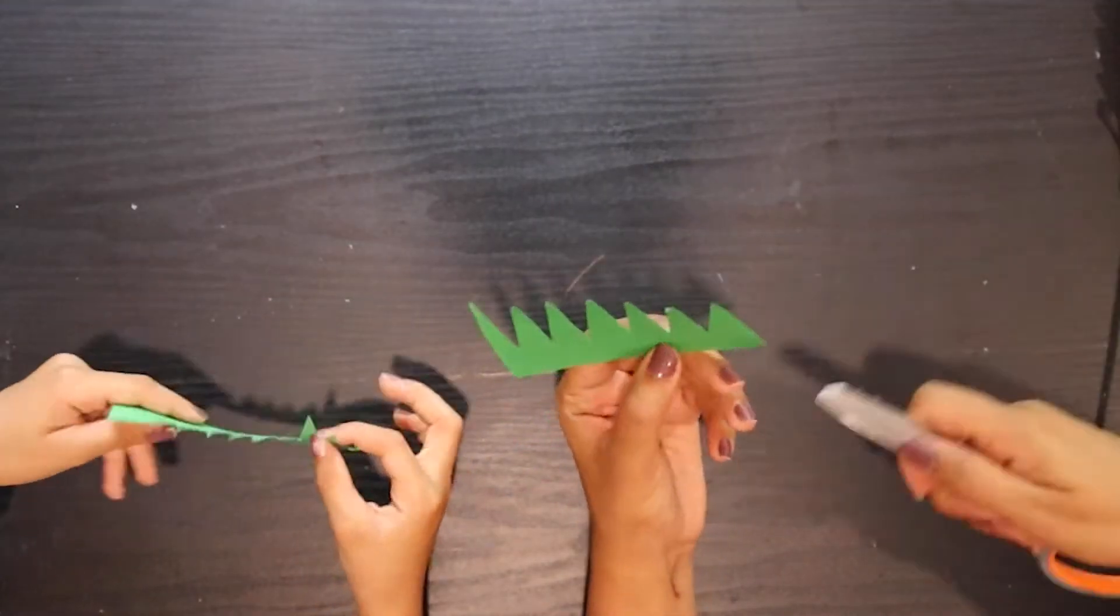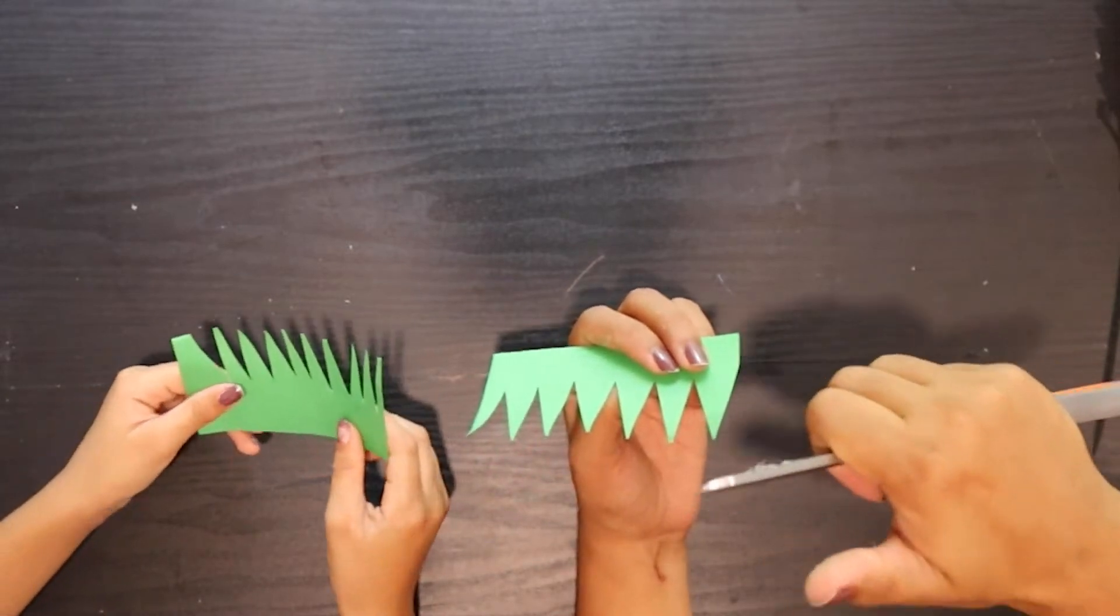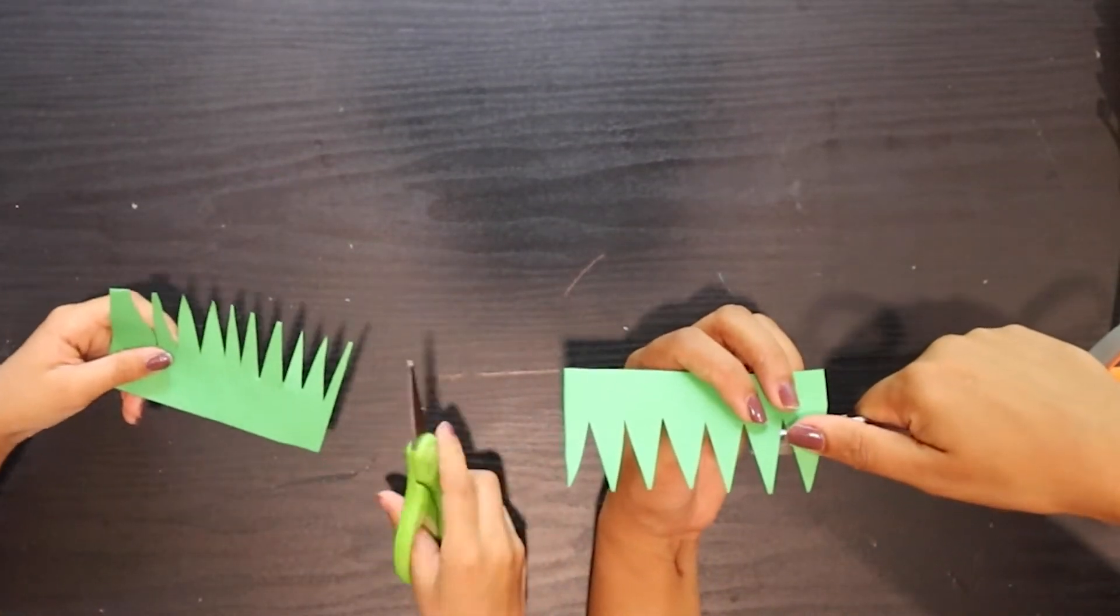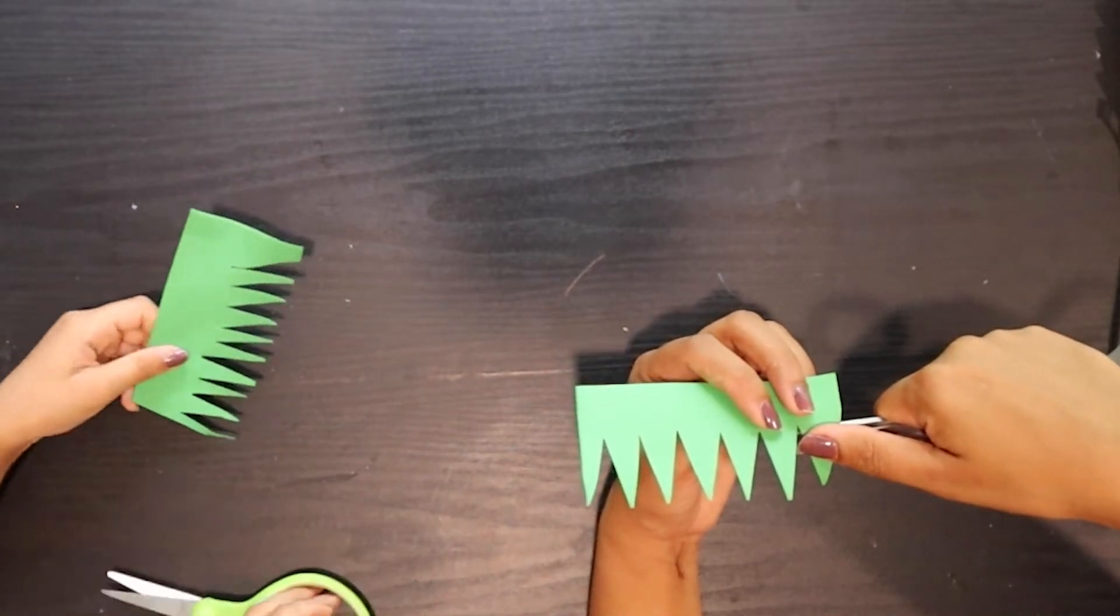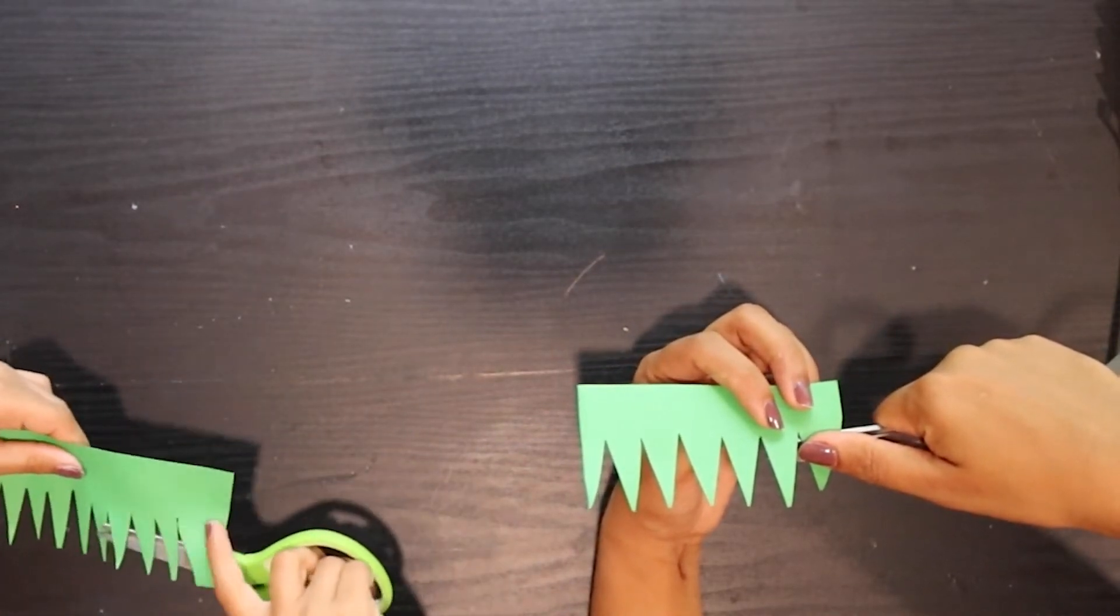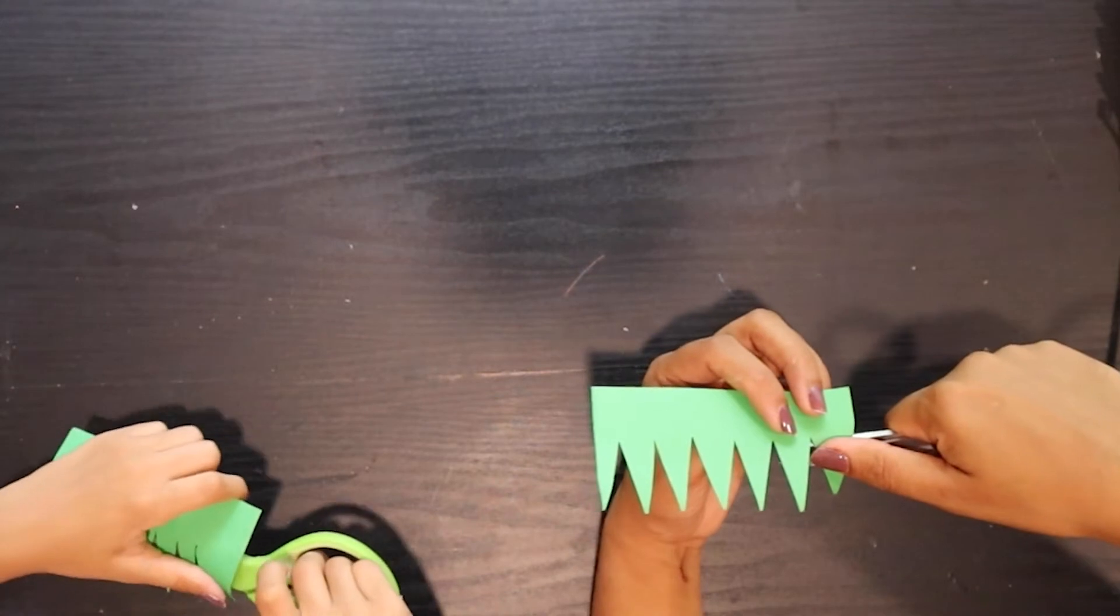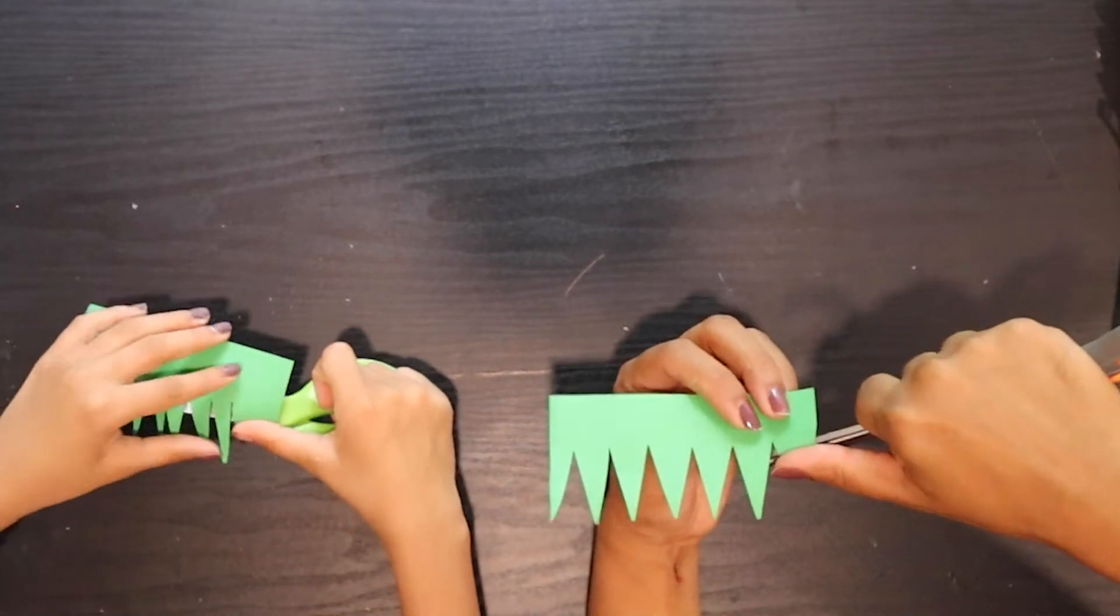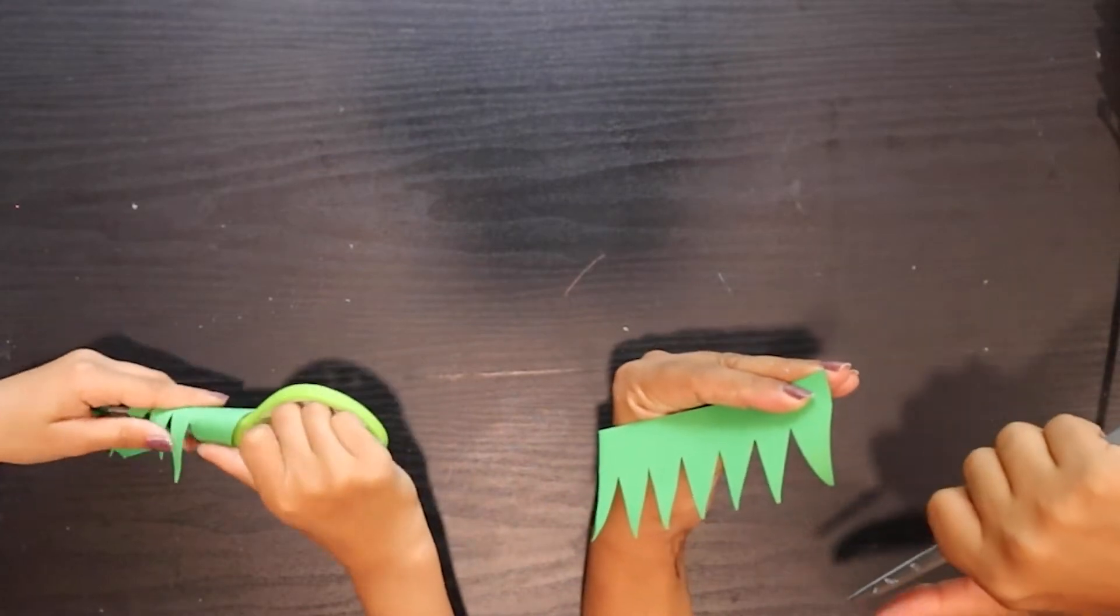When we have cut this, now we will have to curve it. So take your scissors and put a thumb on top of the leaf. Okay! Turn it towards you. Yes! Put a thumb. And hold the scissors and curve it like that.